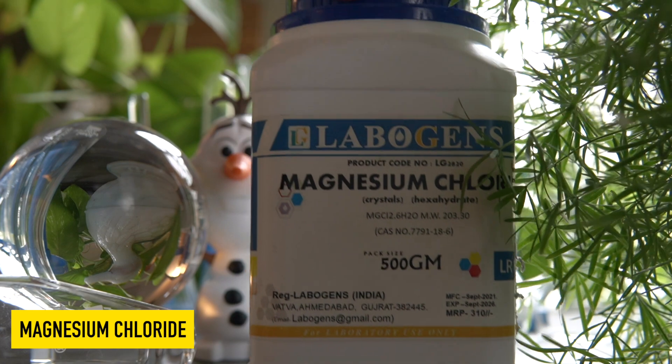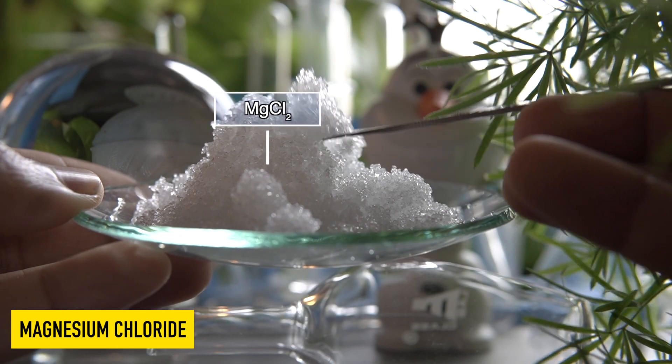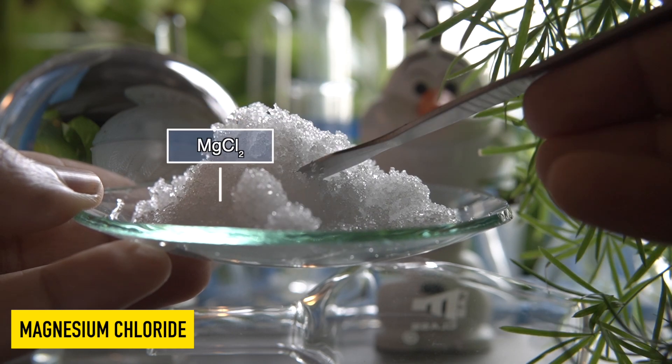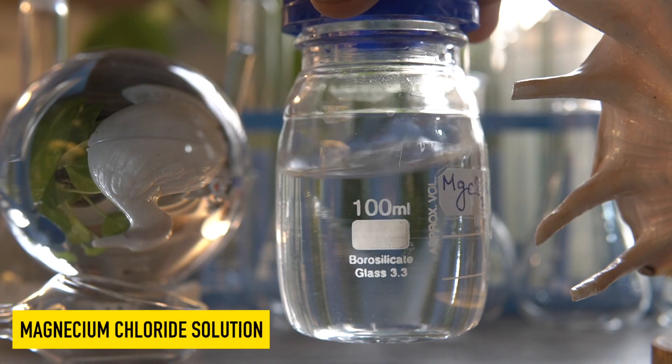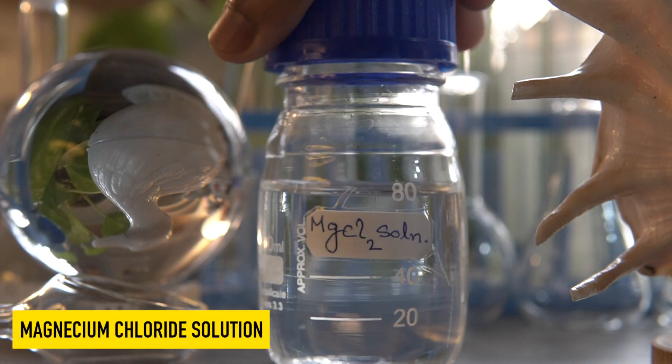This is magnesium chloride, a deliquescent white solid. It means that it has a tendency to absorb moisture from air and dissolve in it. It's very easily soluble in water to make its solution.